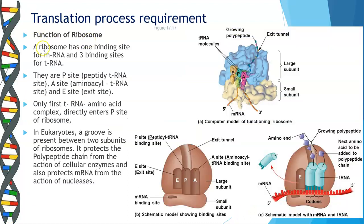A ribosome has one binding site for mRNA and three binding sites for tRNA. Have a look at this picture — it's a computer model of a functioning ribosome showing a 3D image and 2D views. The three tRNA binding sites are: the P site (peptidyl tRNA site), the A site (aminoacyl tRNA site), and the E site (exit site). One mRNA binding site is also present.